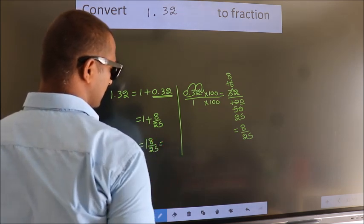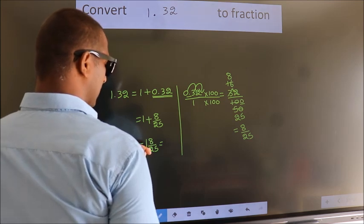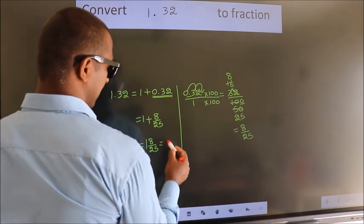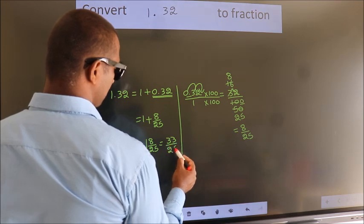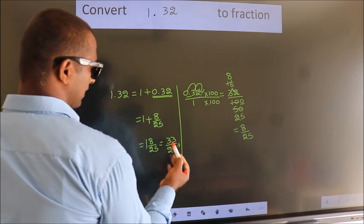In improper fraction it is 1 into 25, which is 25, plus 8 equals 33. So 33 by 25 is our fraction.